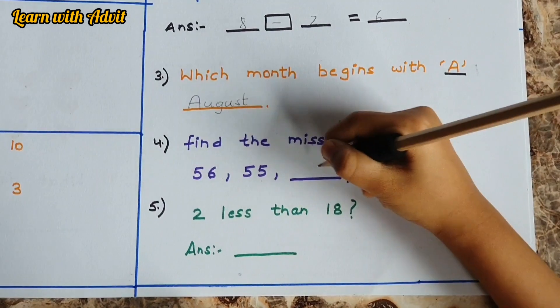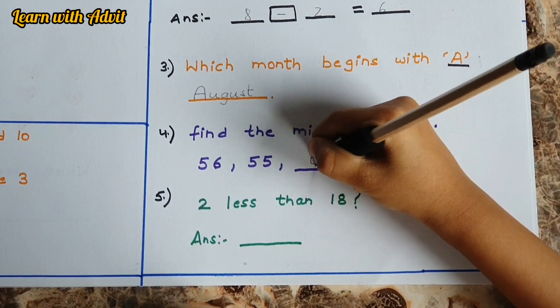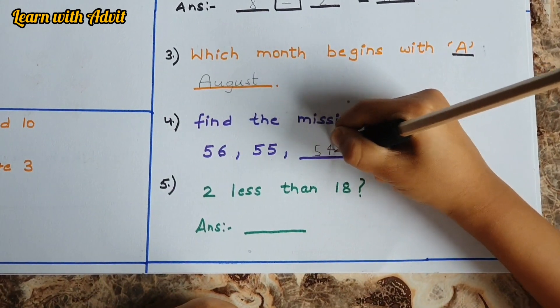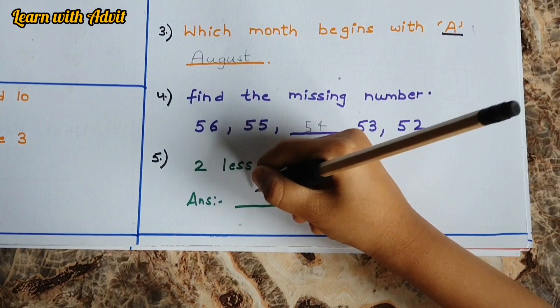Find the missing number: 56, 55, 54, 53, 52. Next is 2 less than 18 is 16. Very good.